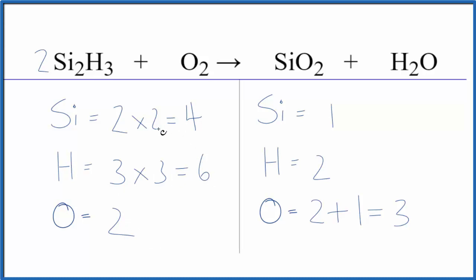It looks like I could put a 4 in front of the SiO2. 1 times 4, that would equal 4, and let's update our oxygen atoms. We have this 2 times 4, that gives us 8, plus we have 1 over here, that gives us 9.